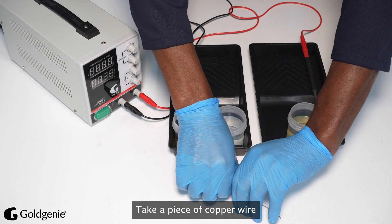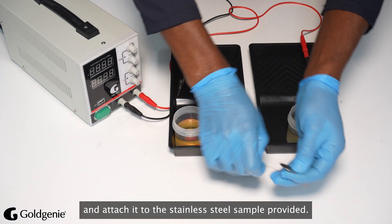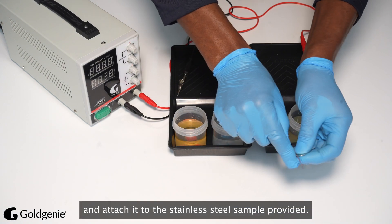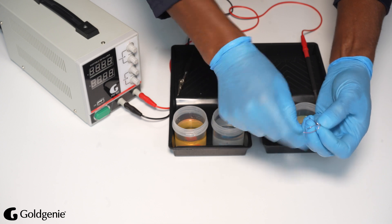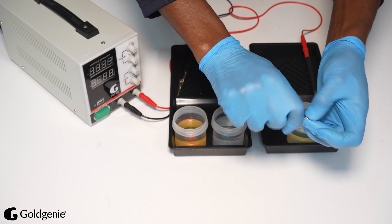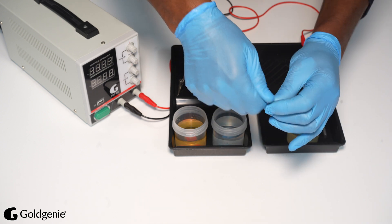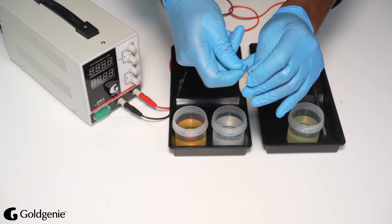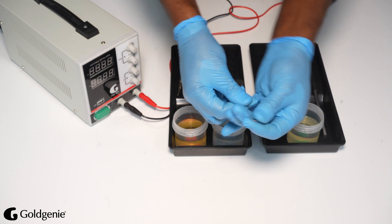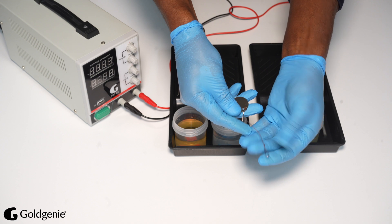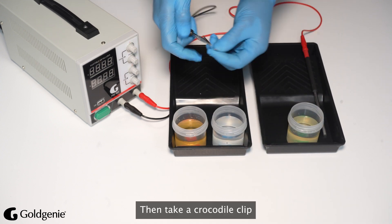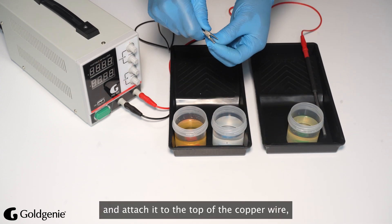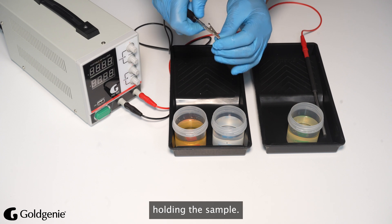Take a piece of copper wire approximately 6 inches long and attach it to the stainless steel sample provided. Then take the crocodile clip and attach it to the top of the copper wire holding the sample.